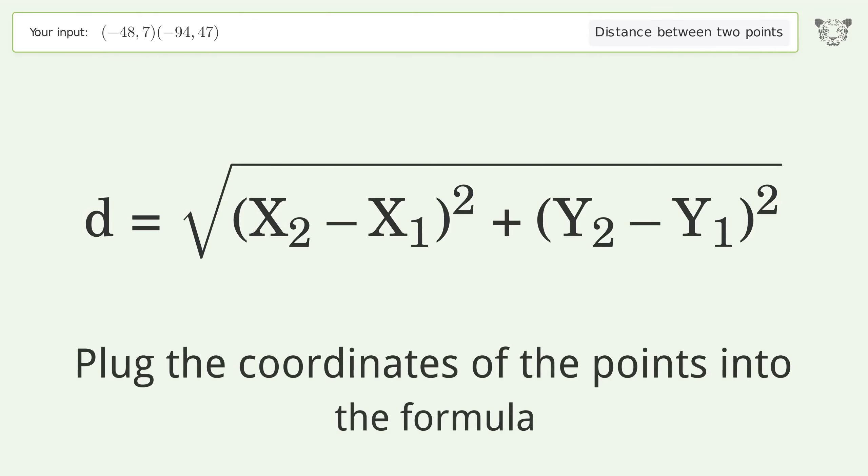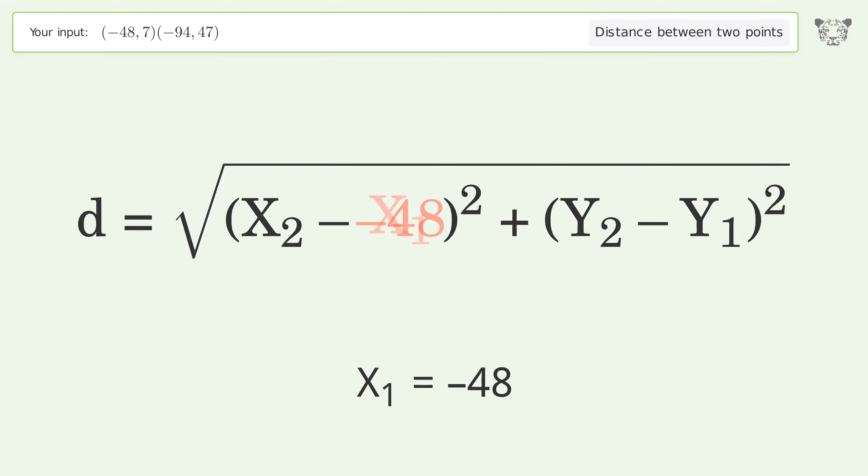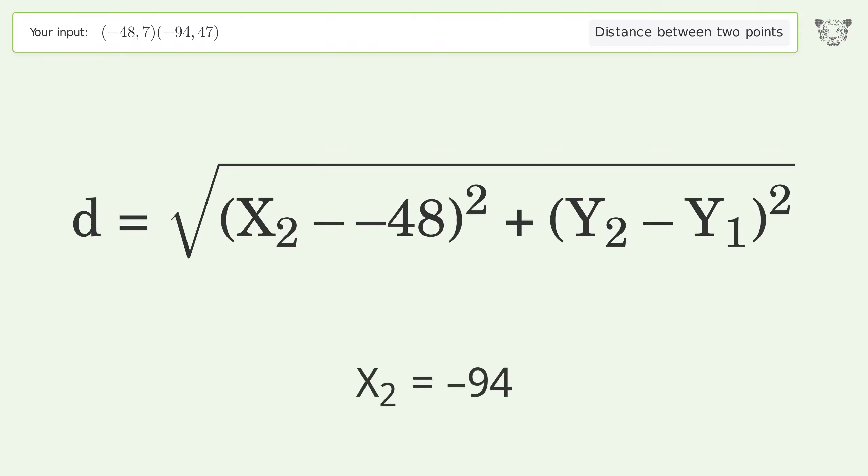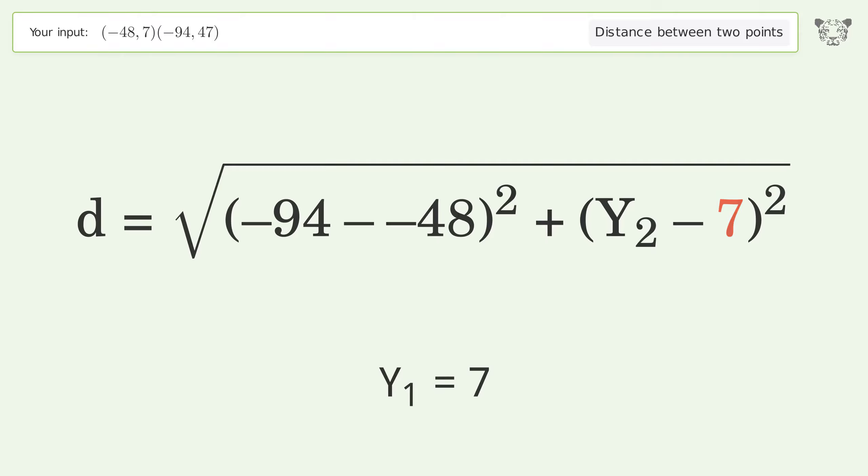Plug the coordinates of the points into the formula: x1 equals negative 48, x2 equals negative 94, y1 equals 7, y2 equals 47.